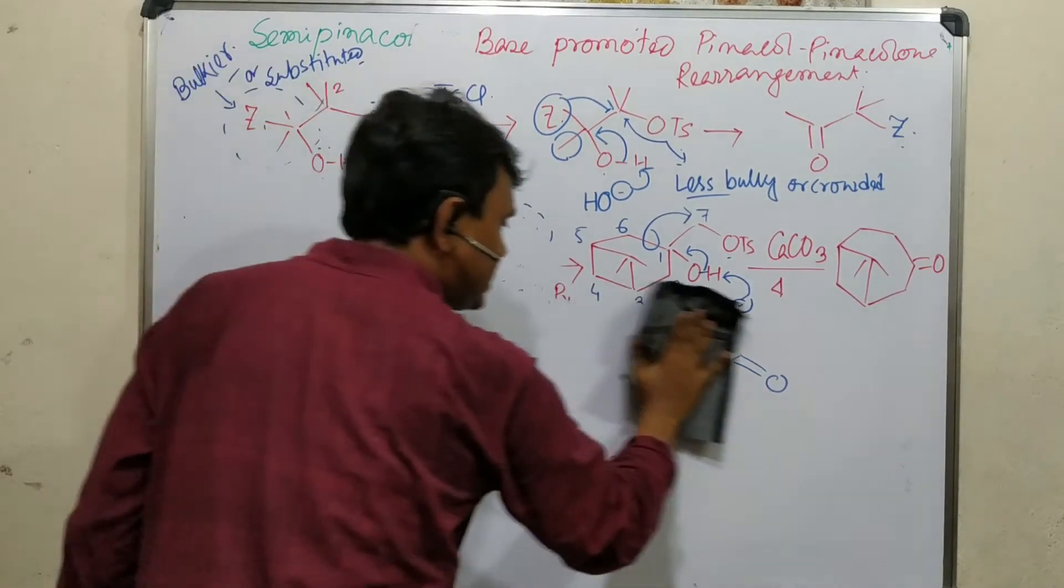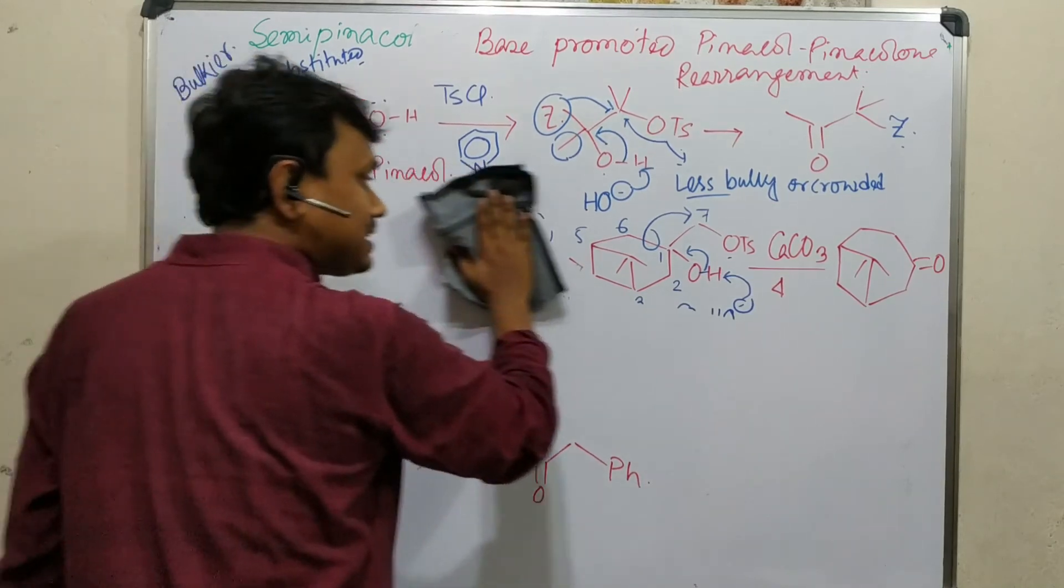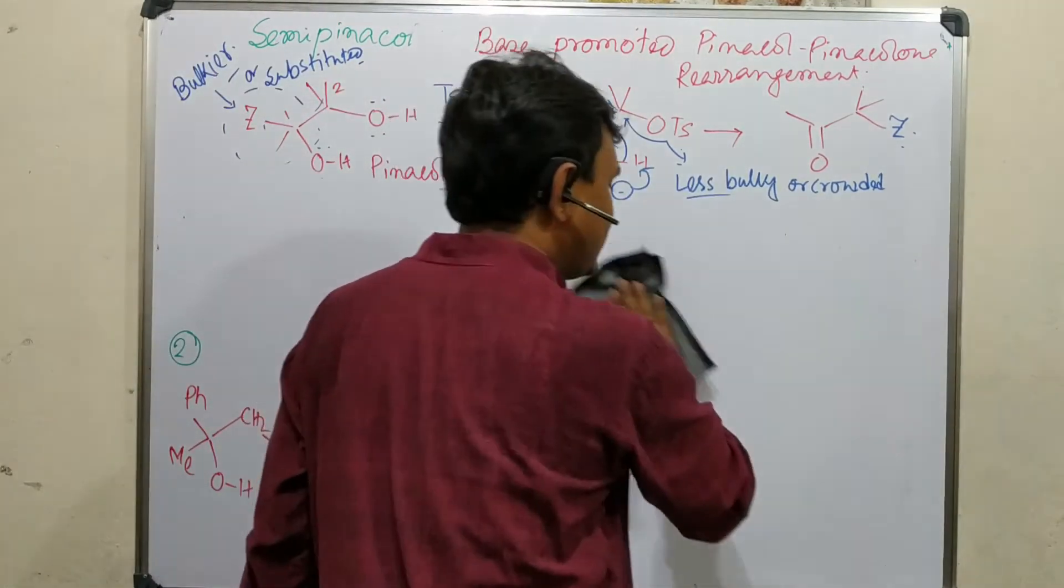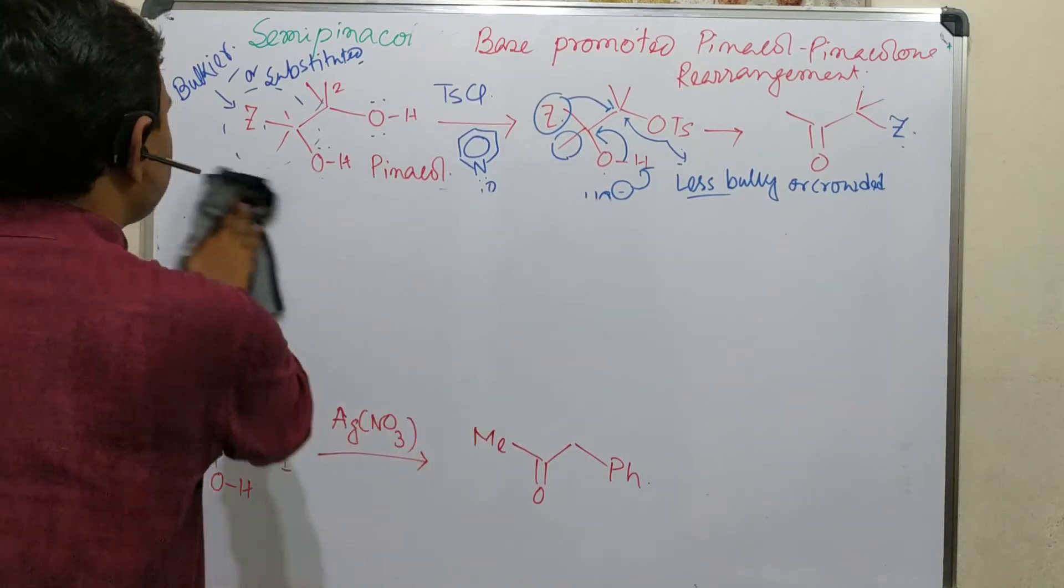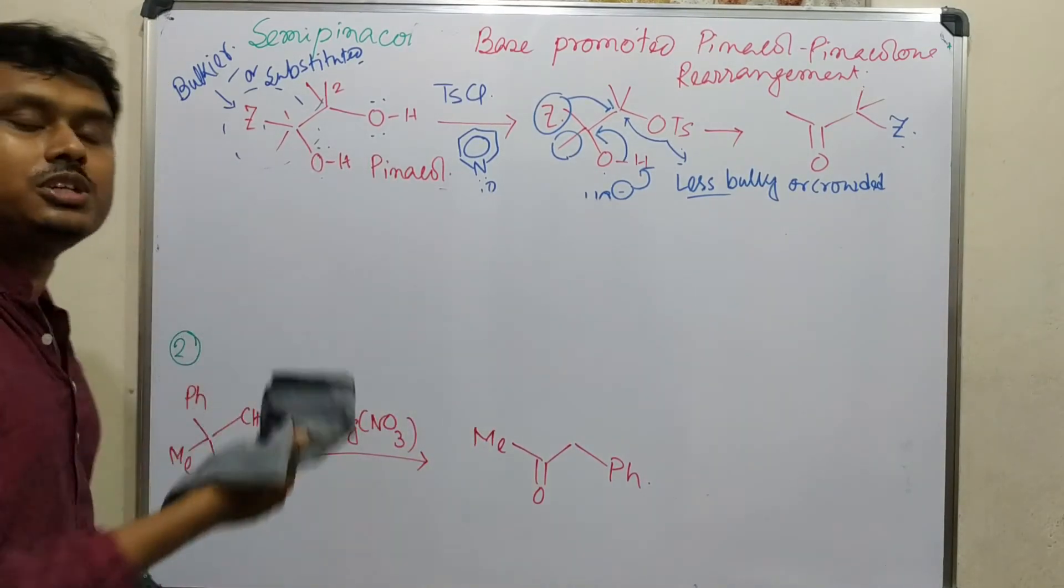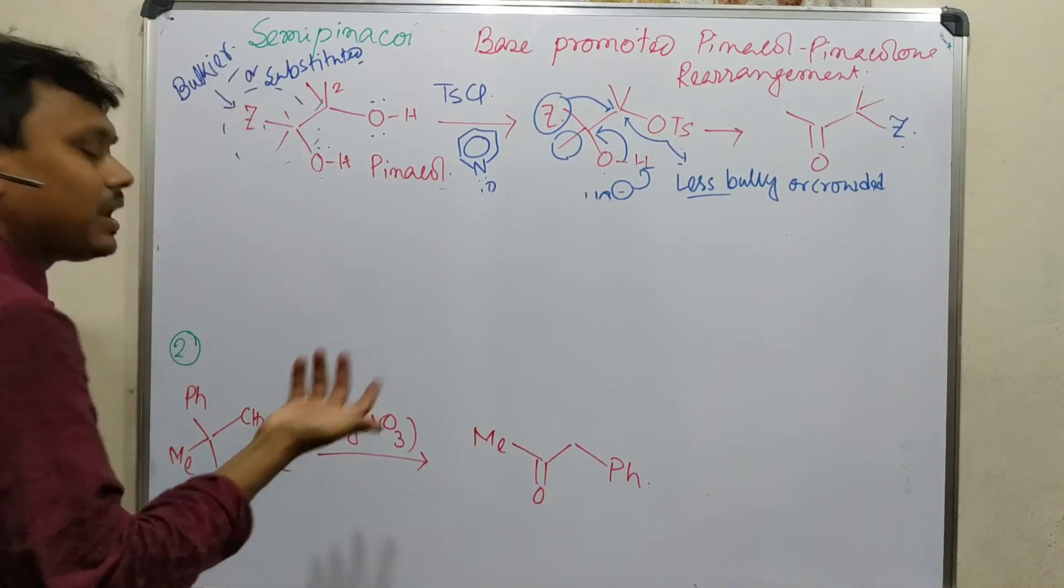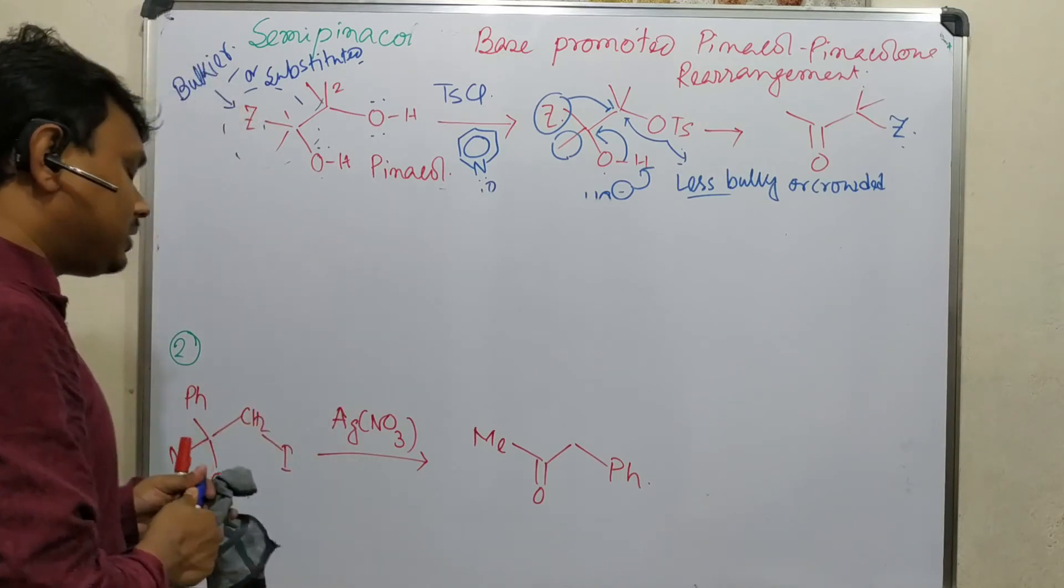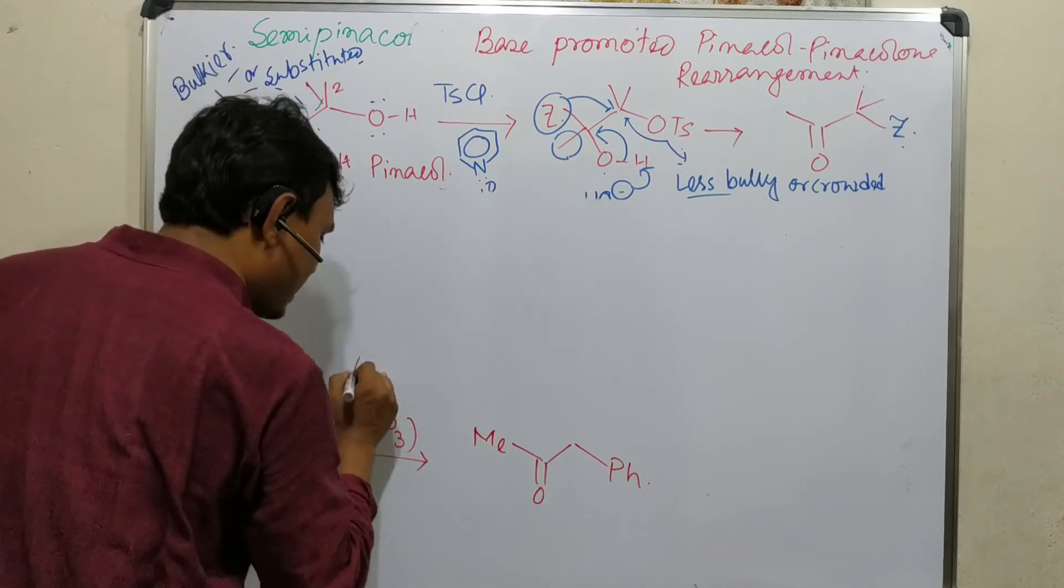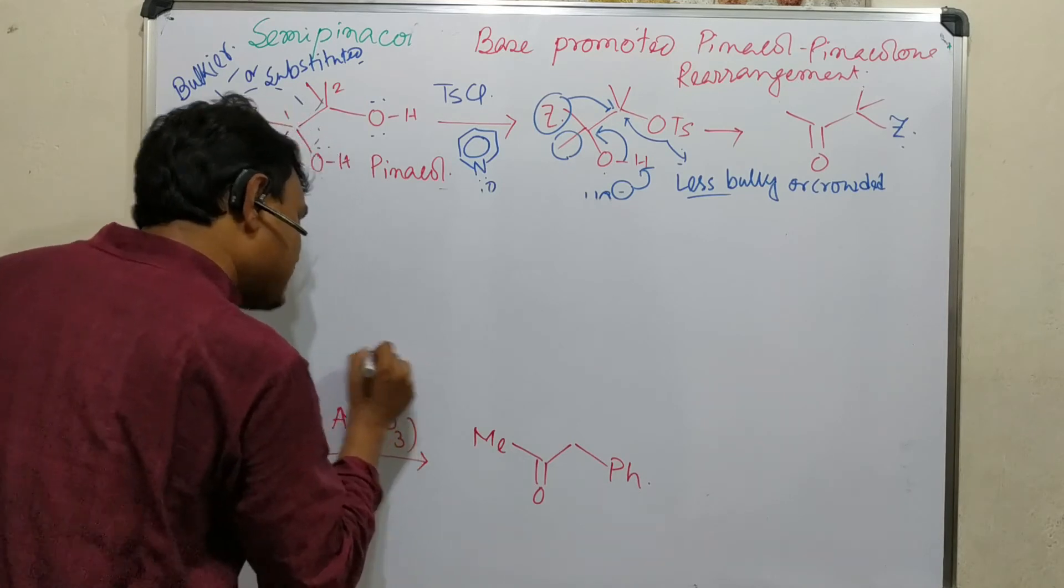Now we will discuss another type of example, and that is the silver salt-mediated pinacol-pinacolone rearrangement type reaction. We know that silver plus from silver nitrate has a higher affinity for halogen, except fluorine.